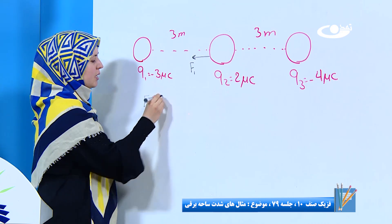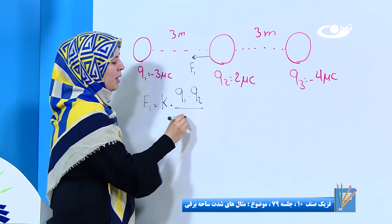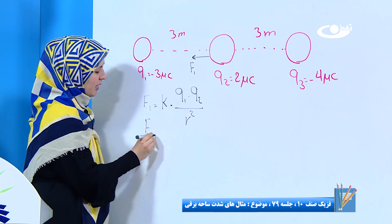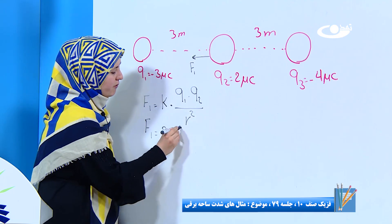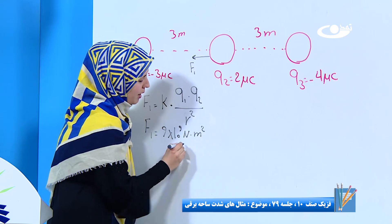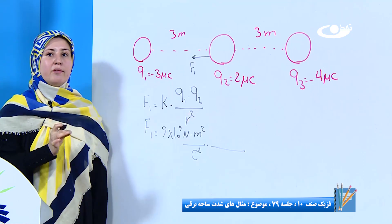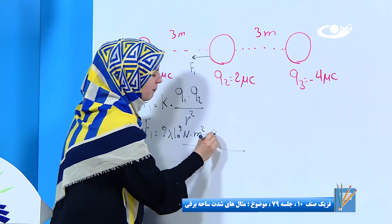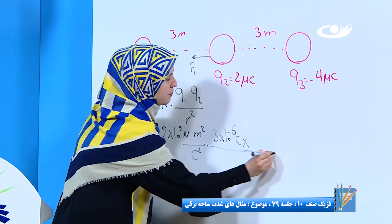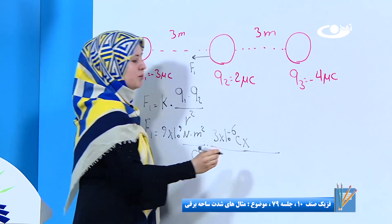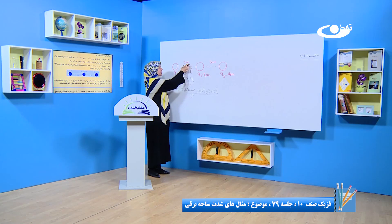پس بیاین که در ابتدا مقدار F1 را پیدا کنیم. F1 مساوی است با K ضرب Q1 ضرب Q2 بر روی R مربع. F1 مساوی است با مقدار K را داریم ۹ ضرب ۱۰ به توان ۹ نیوتن در متر مربع بر کولمب مربع. ضرب مقدار ذره اول که منفی سه میکرو کولمبه، باید به کولمب تبدیل کنیم: ۳ ضرب ۱۰ به توان منفی ۶ کولمب. ضرب مقدار ذره دوم ۲ میکرو کولمب: ۲ ضرب ۱۰ به توان منفی ۶ کولمب. و مقدار فاصله سه متر.